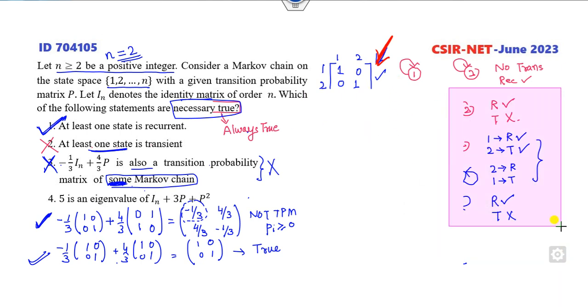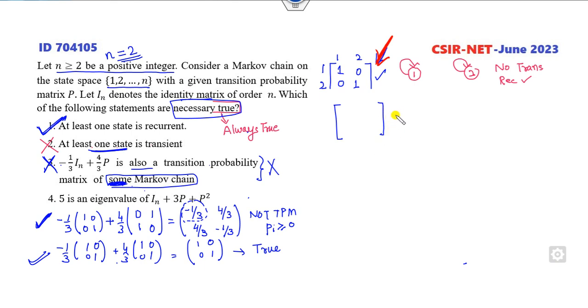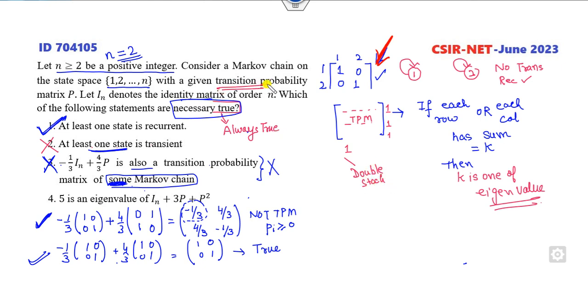Now look at this last option related to eigenvalue. Remember I already gave you one simple tip: if each row or if each column has sum equal to k, then what is the meaning? Then k is one of the eigenvalues. This is the theory we discussed in earlier classes. So if we all know in the TPM the sum of each row is 1, it means 1 is the eigenvalue of P. So what is the eigenvalue of I + 3P + P²?